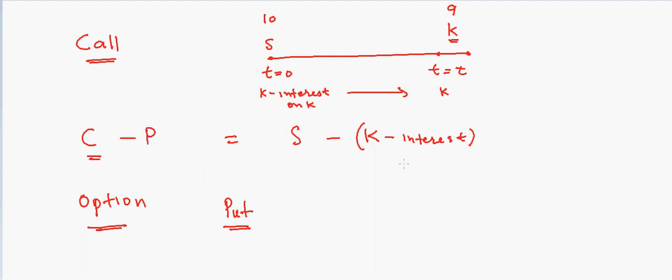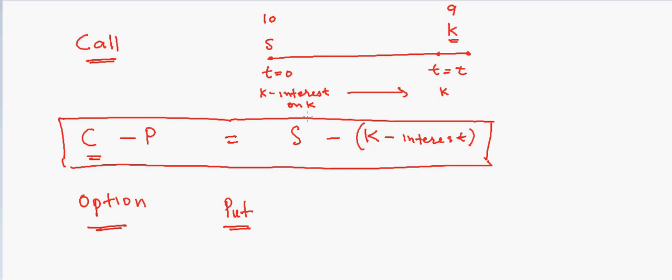Then we will have a better form of call-put parity. Now if we want to put more details into it, we can also see the dividends. S is the stock, so if we would have bought the stock right now, we would get all the dividends until time T. But because we are not buying the stock, we are buying the option, we will lose all the dividends. So those dividends need to be subtracted from S, so we have to say minus dividends.